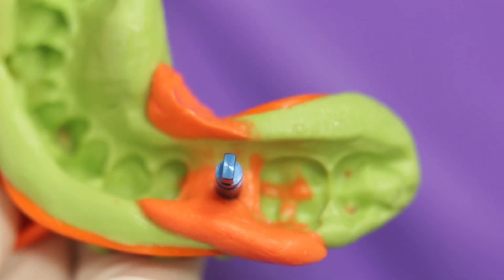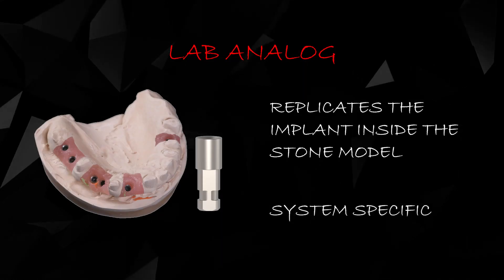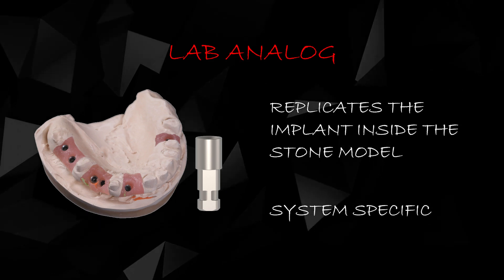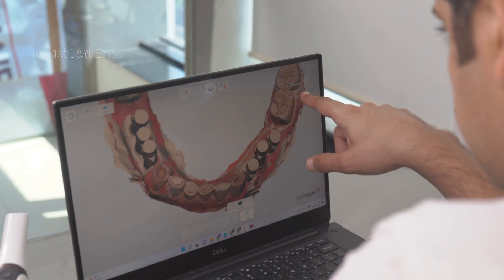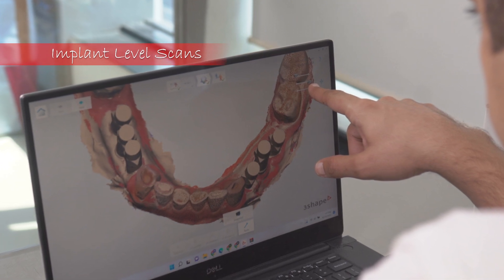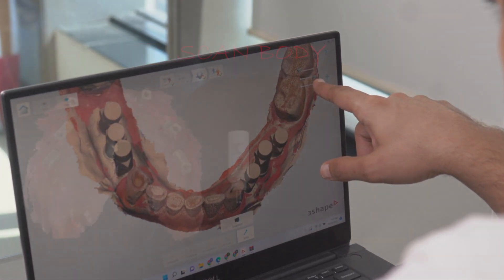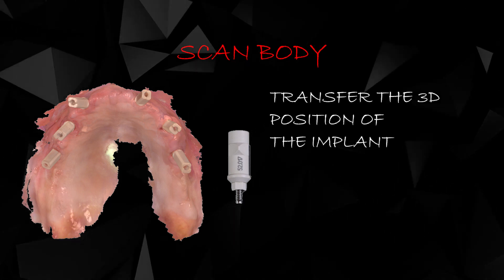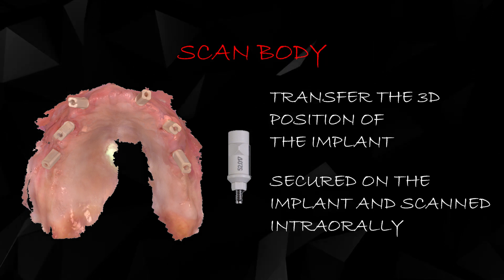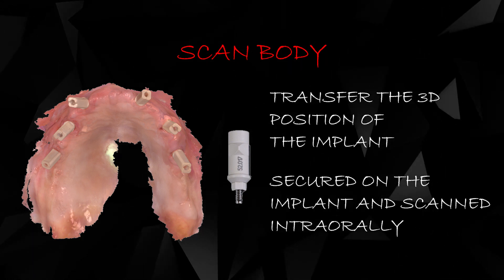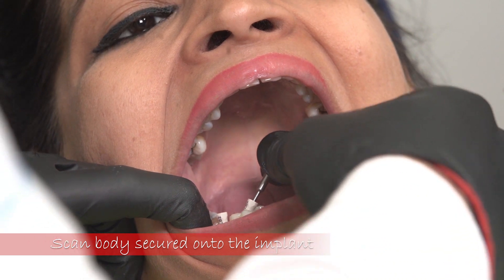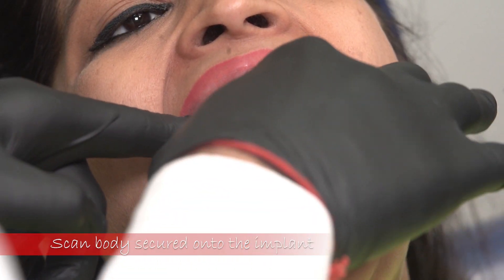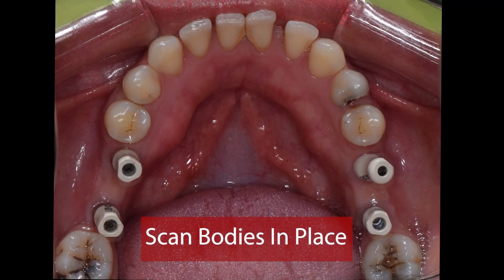Both impression posts and analogs are always system specific, meaning a particular implant system will have its own specific impression posts and analogs. Moving over to implant level digital impressions, we use something called a scan body, which substitutes an impression post and serves the exact same purpose of transferring the implant position to the CAD software.